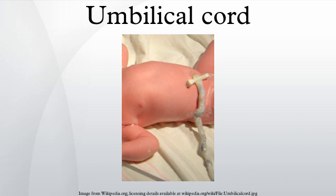Umbilical non-severance: some parents choose to omit cord severance entirely, a practice called lotus birth or umbilical non-severance, where the entire intact umbilical cord is allowed to dry and separates on its own, falling off and leaving a healed umbilicus. Umbilical cord catheterization: as the umbilical vein is directly connected to the central circulation, it can be used as a route for placement of a venous catheter for infusion and medication. The umbilical vein catheter is a reliable alternative to percutaneous peripheral or central venous catheters or intraosseous cannulas, and may be employed in resuscitation or intensive care of the newborn.